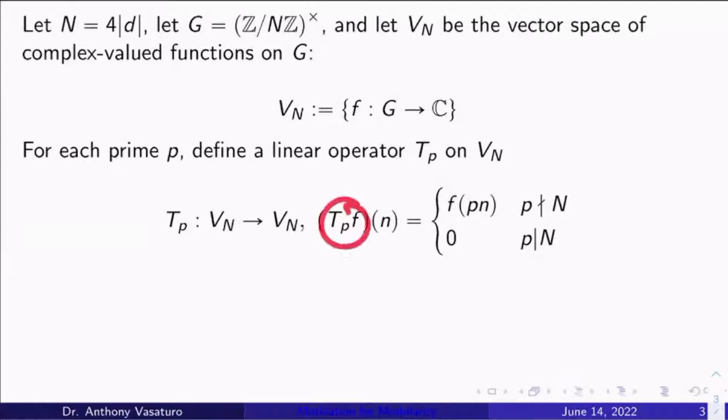So here's what the function T_p(f) does as a function on G. And of course, what do I mean by p*n here? p*n has to be viewed as an element of G, right? So just take p*n and reduce it mod big N.